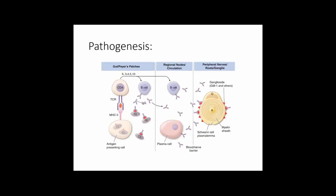The pathogenesis of GBS involves molecular mimicry. Campylobacter has a glycolipid structure that cross-reacts with gangliosides, and antibodies produced against this Campylobacter glycoprotein cross-react with ganglioside antigens in the myelin sheath, leading to demyelination.